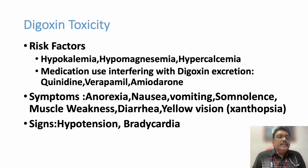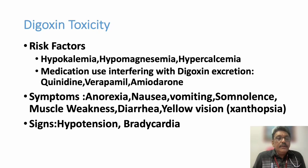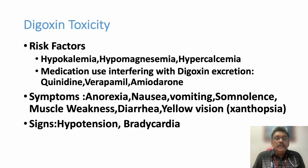Risk factors for Digoxin toxicity include hypokalemia, hypomagnesemia, hypercalcemia, and other drugs taken alongside Digoxin such as quinidine, verapamil, and amiodarone — all of which can increase the risk of toxicity. Symptoms of Digoxin toxicity include anorexia, nausea, vomiting, increased sleepiness, muscle weakness, diarrhea, and yellow vision. These are the major adverse effects of Digoxin toxicity.